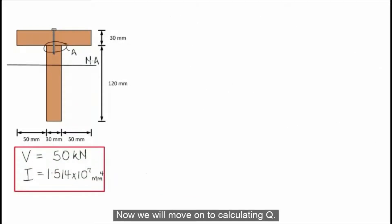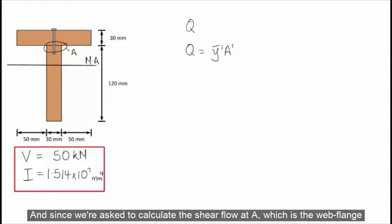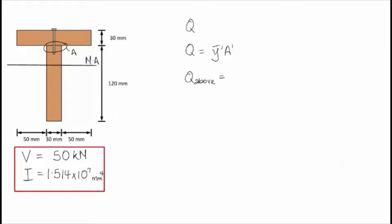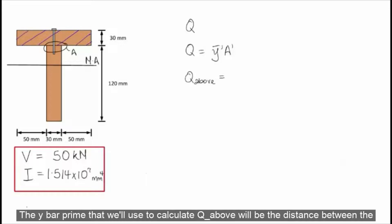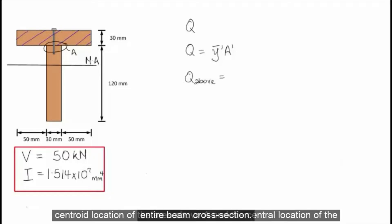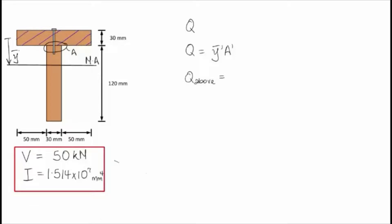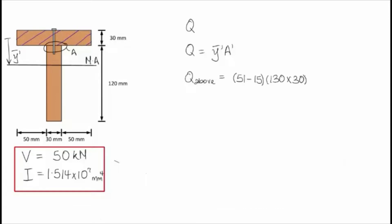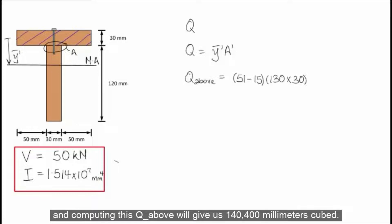Now we will move on to calculate Q. We will remember the formula for Q is Y-bar prime times A prime. Since we are asked to calculate the shear flow at A, which is the web-flange interface, to calculate Q we will consider the area either above or below A. Calculating Q considering the area above A: the Y-bar prime is the distance between the centroid of the area above A and the centroid of the entire cross-section, which is 51 minus 15, and A prime is 130 times 30. Computing this, Q above gives us 140,400 millimeters cubed.